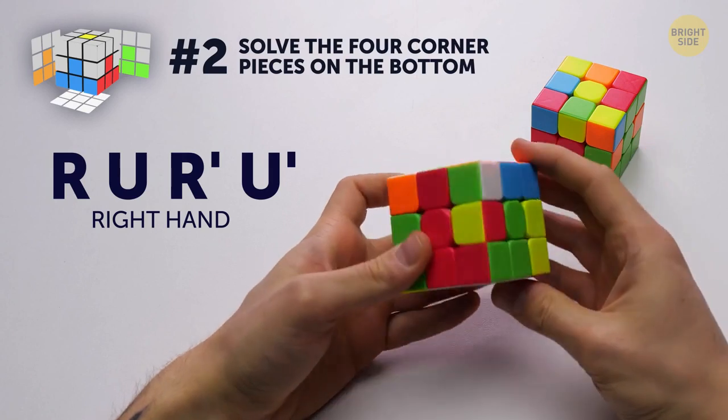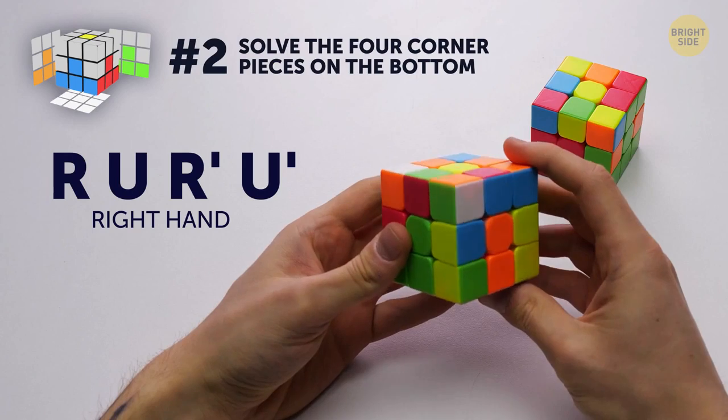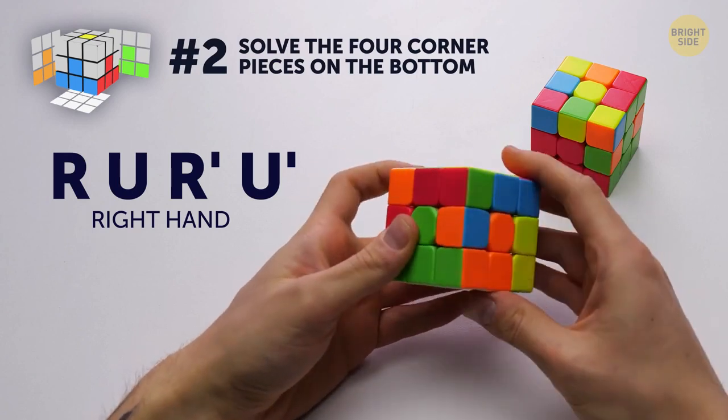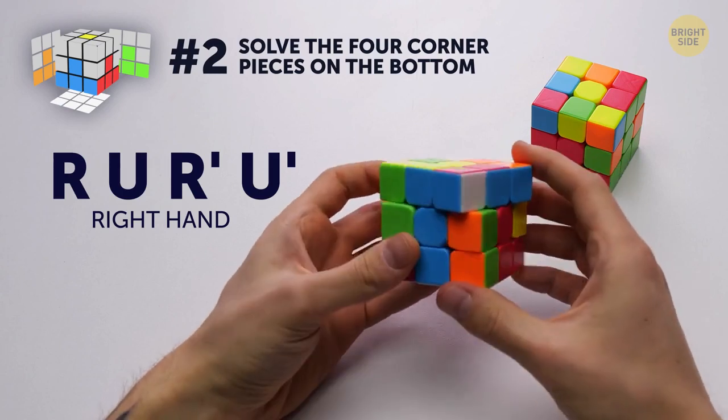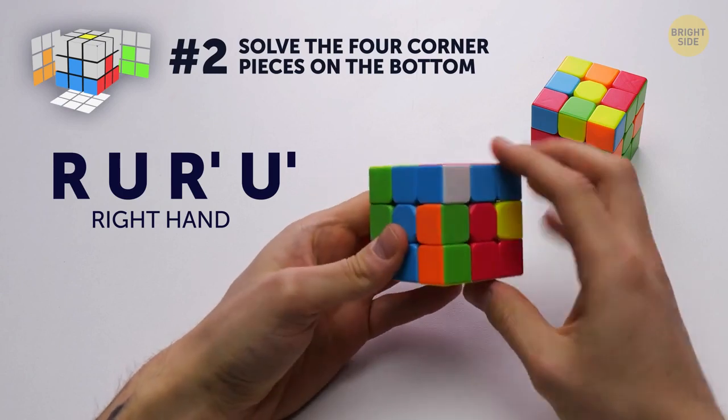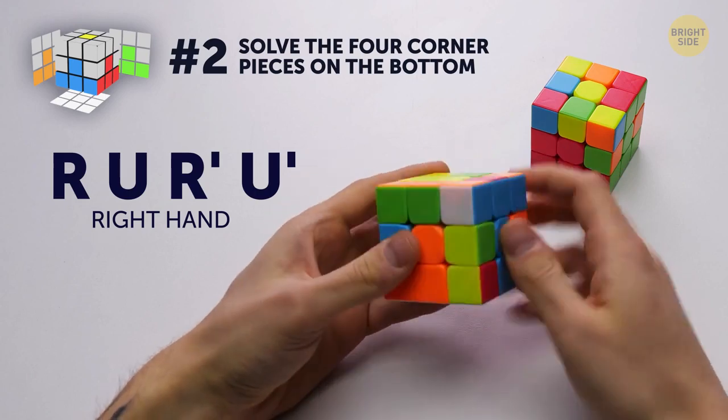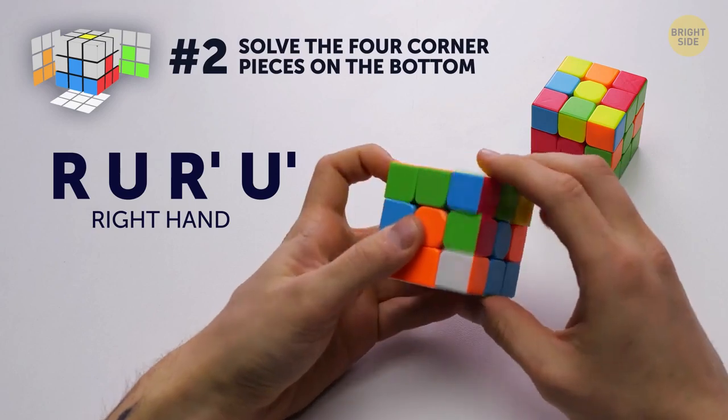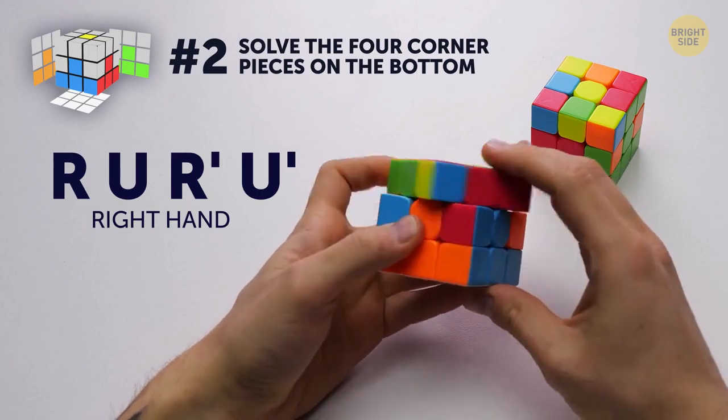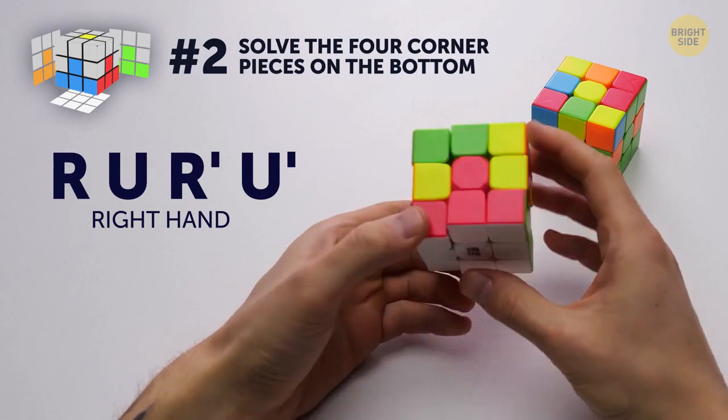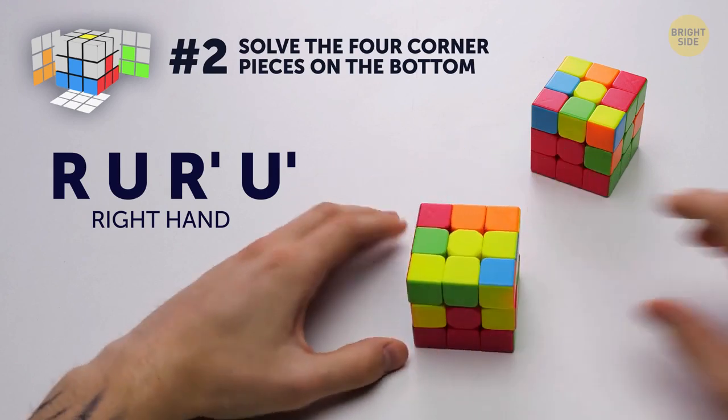Do the same with the rest of the corners. At the end of this stage, you should have little upside-down T's on all sides, ending at the centerpiece.